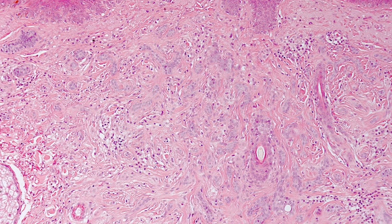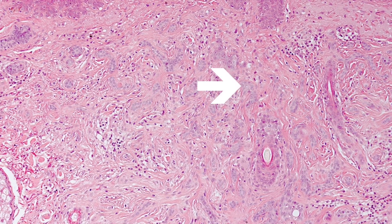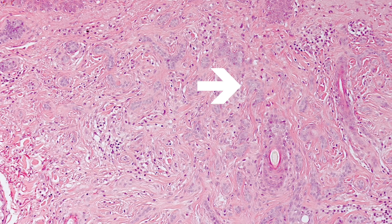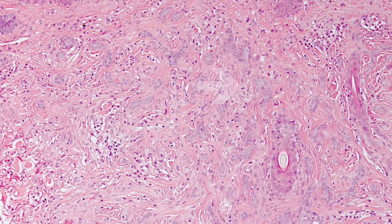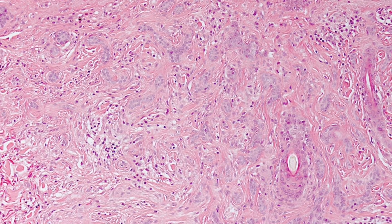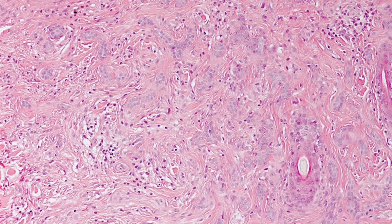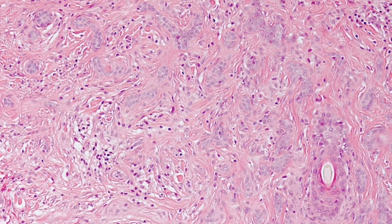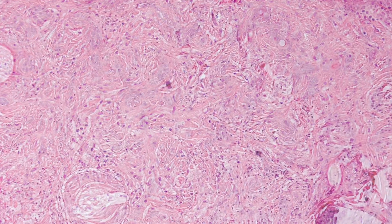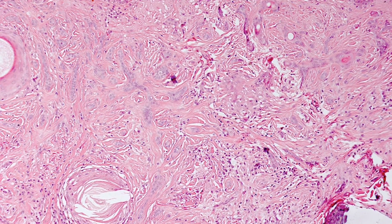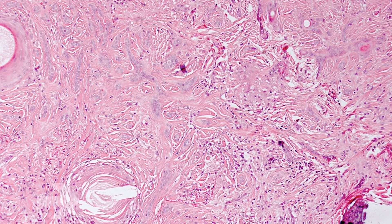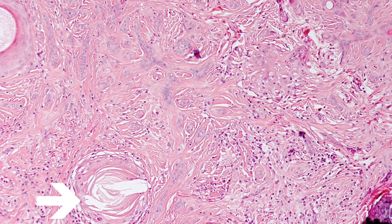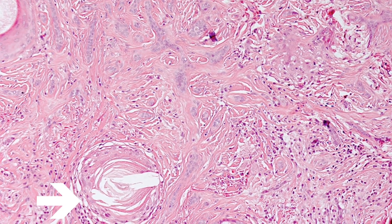On higher magnification, the strands of basaloid cells become apparent. And towards the left of the picture you can see horn cysts.